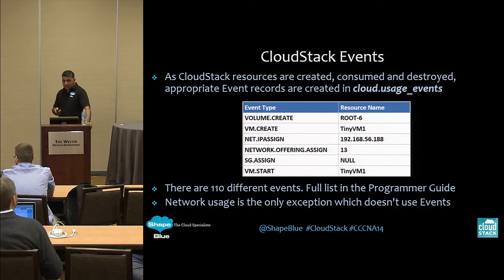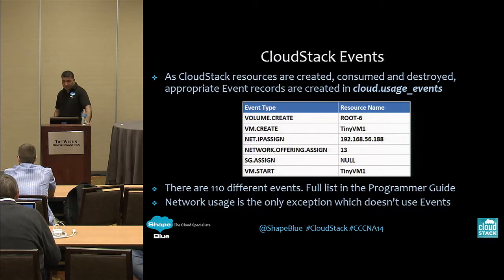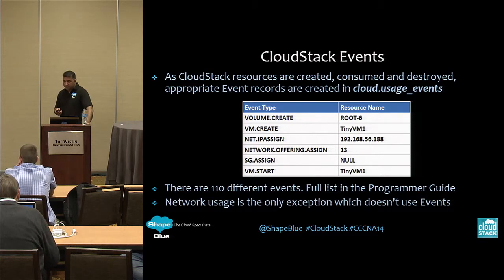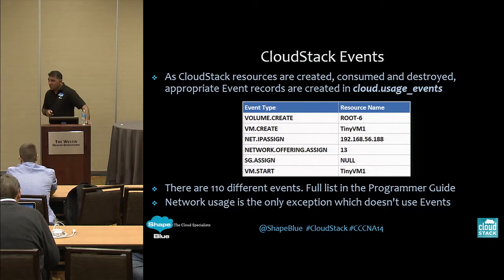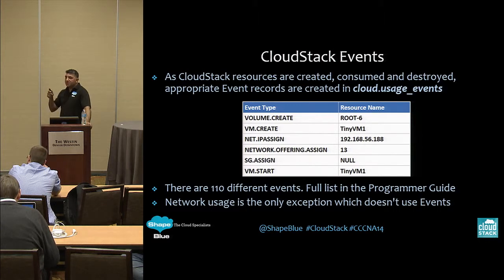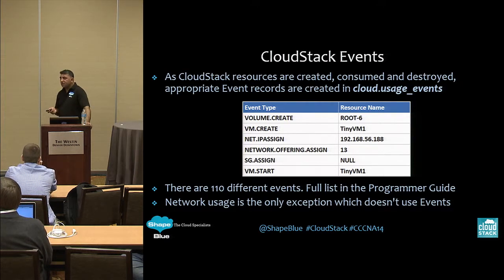There are over 100 different types of events. Further information about those events can be found in the developer's programming guide. The only exception in terms of resource usage is for networking — specifically the number of bytes sent and received by the VM. That information isn't generated from events; it's captured separately depending on what networking model you're using within CloudStack. If you're using basic networking, you would need to set up Traffic Sentinel on a separate host in your network to monitor the physical routers and capture networking statistics. If you're using an advanced network, the actual virtual router provides those networking statistics.